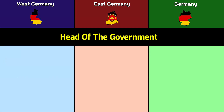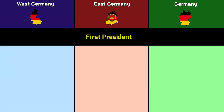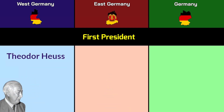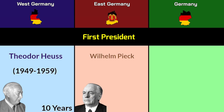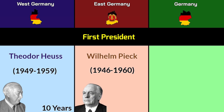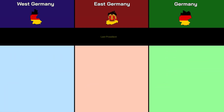Head of government: president for all regions. First president — West Germany: Theodor Heuss, 1949–1959, total 10 years; East Germany: Wilhelm Pieck, 1946–1960, total 14 years; modern Germany: Richard von Weizsäcker, 1989–1994, total 5 years.